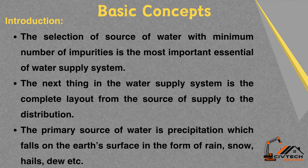Basic Concepts Introduction: The selection of a source of water with the minimum number of impurities is the most important essential of a water supply system. The next thing in the water supply system is the complete layout from the source of supply to the distribution. The primary source of water is precipitation, which falls on the earth's surface in the form of rain, snow, hails, dew, etc.